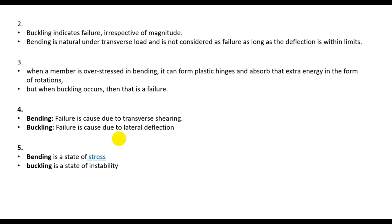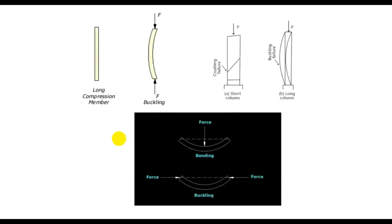When buckling occurs, there is a high chance of structural failure, but for bending, the structure will not fail as long as deflection is within its limits. As shown in this figure, this is a long compression member. When the load is acting along its axis, it is known as buckling.